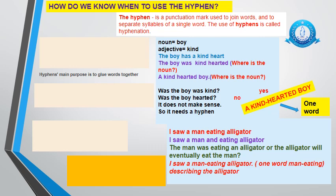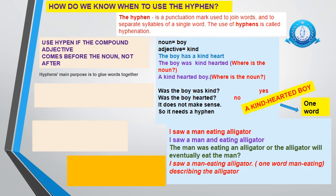Think of a noun — boy. Let's describe the boy: he's kind. The boy has a kind heart. Compound adjectives simplify sentences and make the meaning more precise. So we're going to say the boy was kind-hearted. Now think, where is the noun — is it at the beginning or the end? Look at the next sentence: a kind-hearted boy. The rule is that if the compound adjective comes before the noun — so the noun is at the end — that's when you put a hyphen in there.